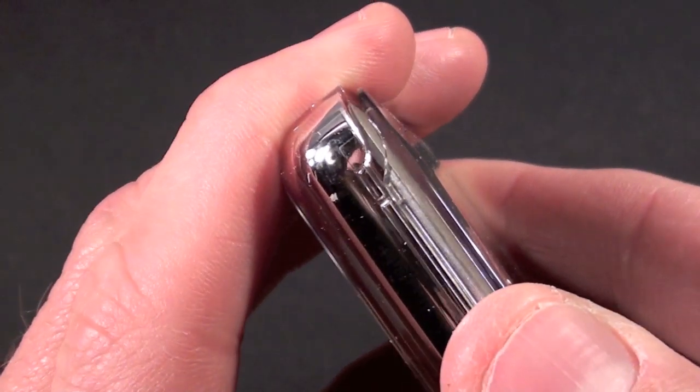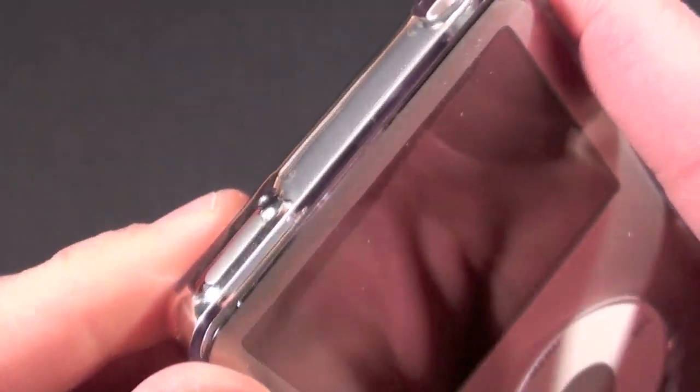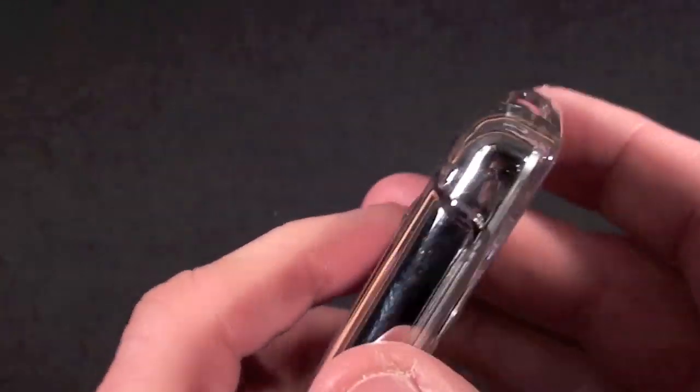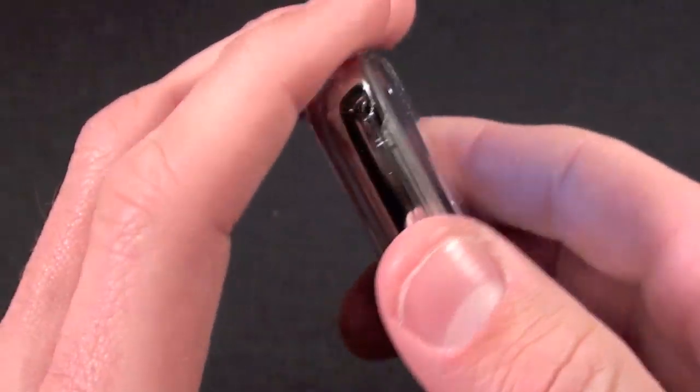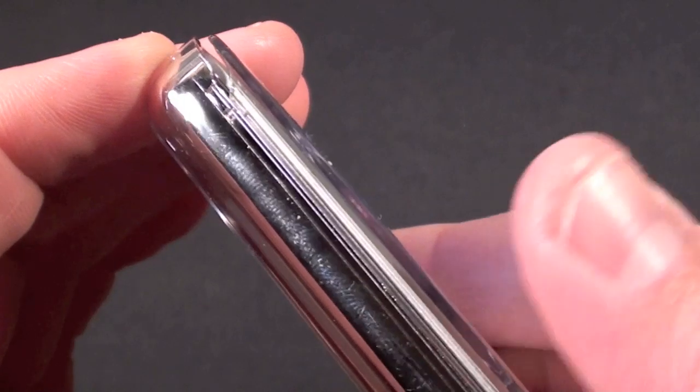It actually slides on over the aluminum faceplate, the front plate. The rails kind of slide along the edge of that. Not sure I like that too much because it will probably scratch the edge.